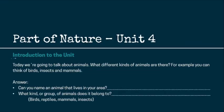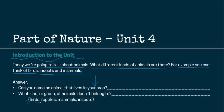I'm going to ask you to pay close attention to the class and use Google Translator, a dictionary, or ask for help with a family member to write your thoughts in English for every activity. This is really important. Now, as an introduction to the unit, today we're going to talk about animals. So, what different kinds of animals are there? For example, you can think of birds, insects, mammals, or even reptiles. Can you name an animal that lives in your area? Maybe an animal that's different from dogs or cats, which are your pets, domestic animals. What kind of group of animals does it belong to? Does it belong to birds, reptiles, mammals, or insects?